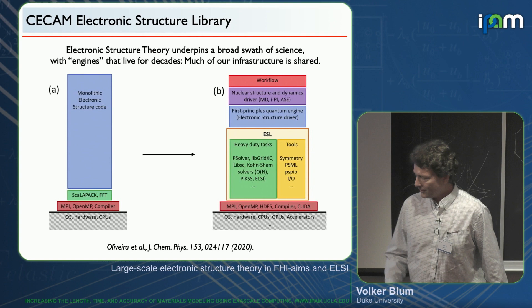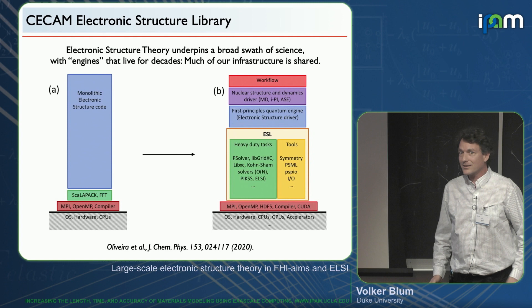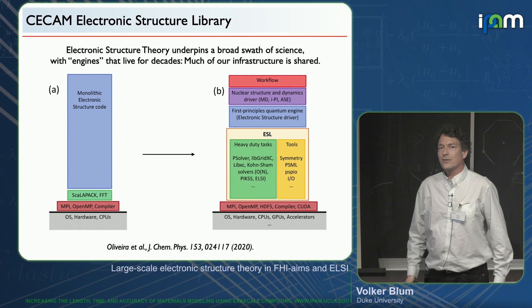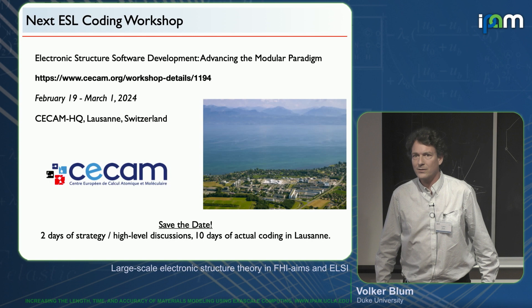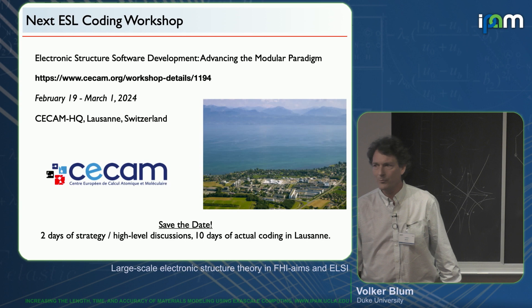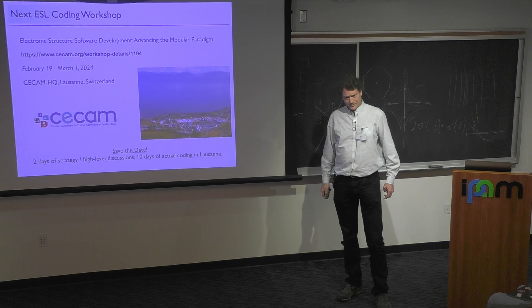The Electronic Structure Library was started by Emilio Artacho and others in 2014 and is run as yearly workshops. The next one will be in 2024 in Lausanne — two days of high-level discussions and then eight days of coding for PhD students, postdocs, and others who work on libraries together. If you're interested, please consider this — save the date.